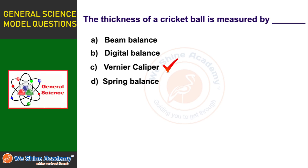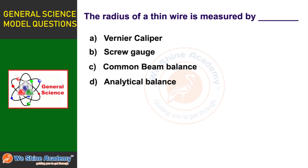The next question is: The radius of a thin wire is measured by — Option A: Vernier caliper, Option B: Screw gauge, Option C: common beam balance, Option D: analytical balance. The answer is Option B: Screw gauge. The radius of a thin wire is measured using a screw gauge.